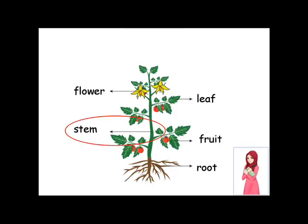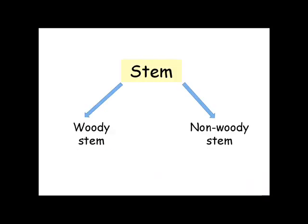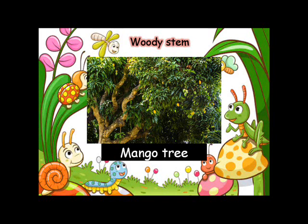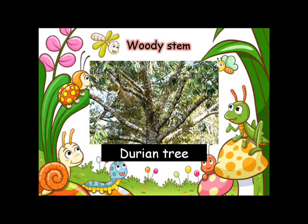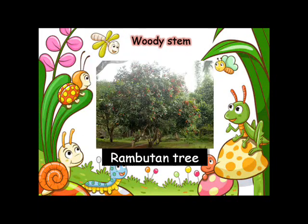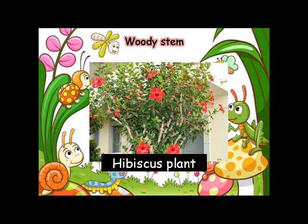Let's look at the next part of the plant, which is stem. Plants can be classified into woody stem and non-woody stem. Let's look at the examples of plants with woody stem: mango tree, durian tree, rambutan tree, and hibiscus plant.